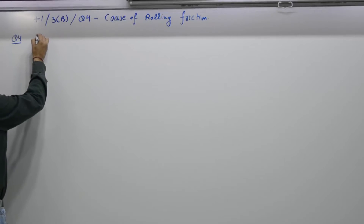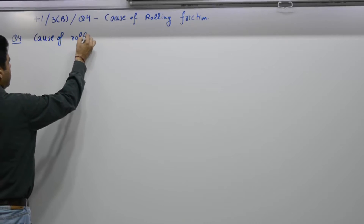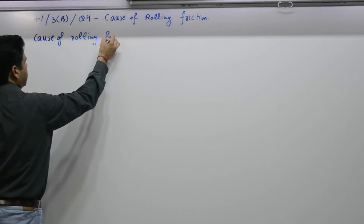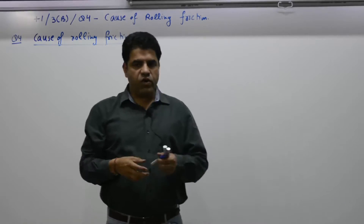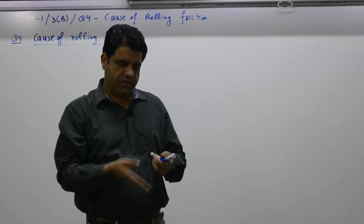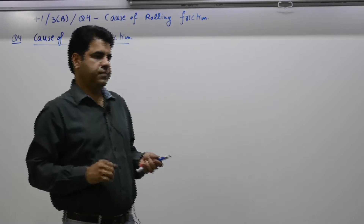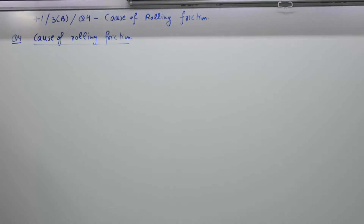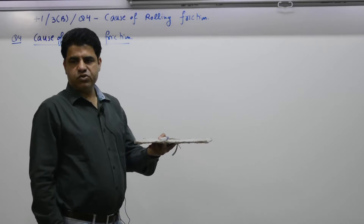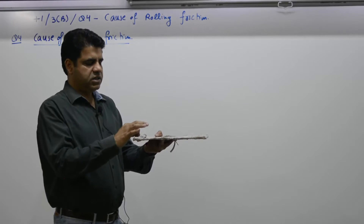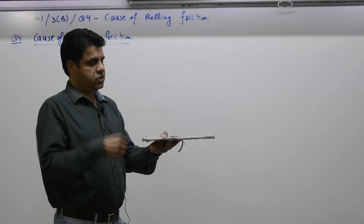Question 4 deals with the cause of rolling friction. If you have an object like a cricket ball, when the batsman hits the ball, the ball moves and stops after a certain distance. The question is: why does it stop? Or in this case, if you have a platform and an object and you roll it, it stops after covering some distance — that is, if you give it some initial velocity, why does it stop?